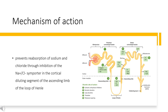By increasing the delivery of sodium to the distal renal tubule, Chlorthalidone indirectly increases potassium excretion via the sodium-potassium exchange mechanism. The exact mechanism of Chlorthalidone's antihypertensive effect is under debate; however, it is thought that increased diuresis results in decreased plasma and extracellular fluid volume, which therefore requires decreased cardiac output and overall lowers blood pressure.